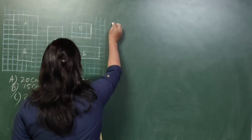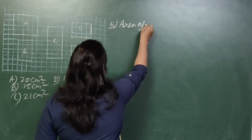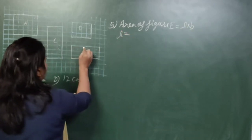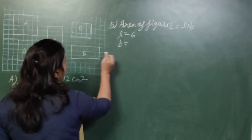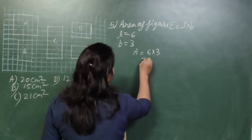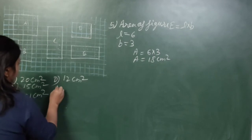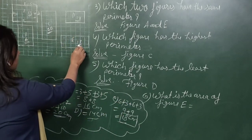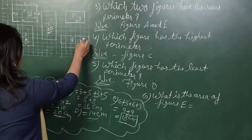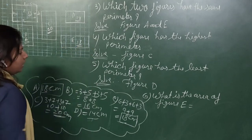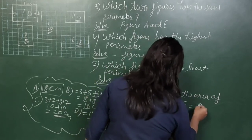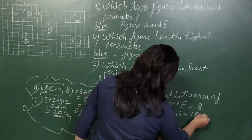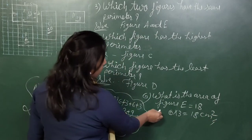Area of figure E: formula is length × breadth. Length is 6 and breadth is 3. Area equals 6 × 3 = 18 centimetres square. You can verify by counting all squares covered by the figure: counting 1 through 18 squares confirms the area is 18 centimetres square.